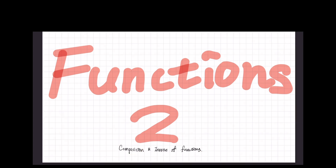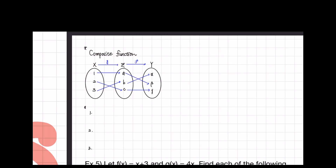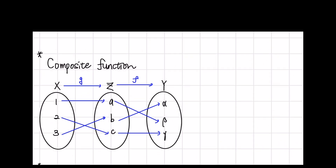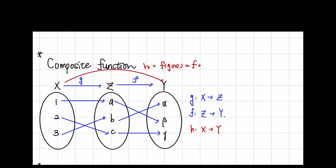What we are going to learn today is composition and inverse of functions. Let's see the composite function first. I'll assume three sets x, z, and y here, and function g is x to z, and function f is z to y. I assume that 1 to a to beta, 2 to c to gamma, and 3 to b to alpha. When we want to find a function h from x to y, the function should go through g of x first and then through f, which can be written as f of g of x. We can denote this as f dot g of x, read as f composed with g, or f of g of x. So this is what we call a composite function.